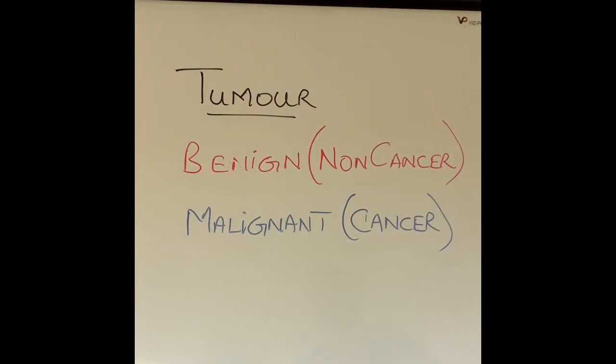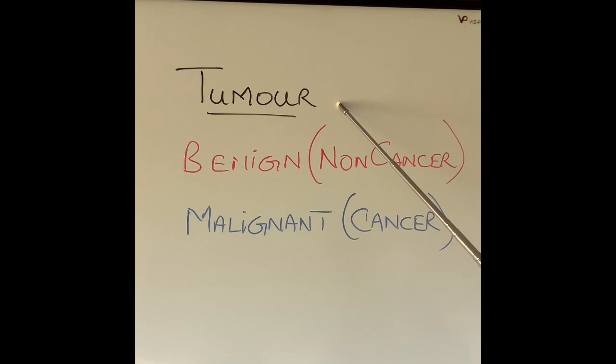So to make things even more confusing, when doctors talk about tumors they don't necessarily mean that you've got cancer and you can die from it. So there are two different types of tumors: benign tumors and malignant tumors. Benign tumors are non-cancerous tumors which means they are not cancer. And malignant tumors are cancerous tumors which means they behave differently from benign tumors.